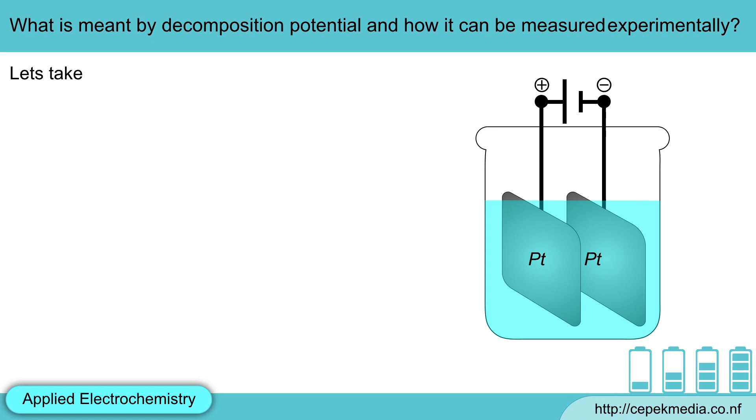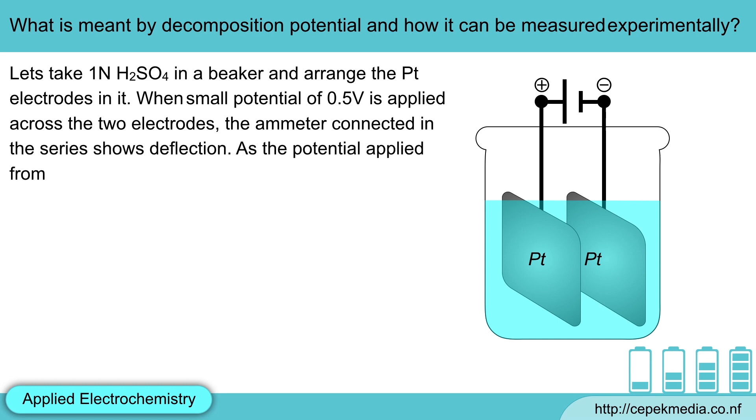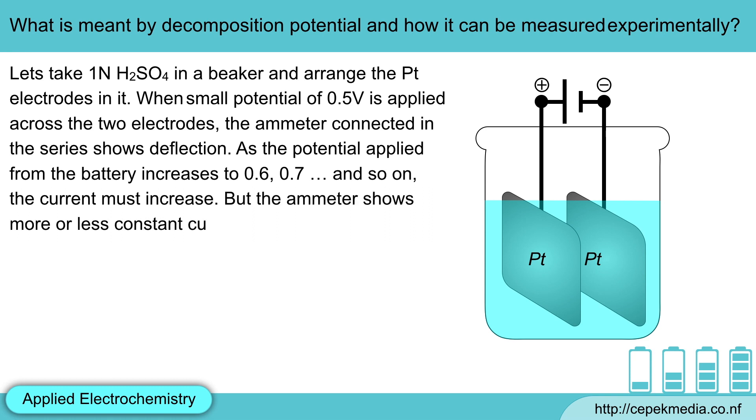Let's take one normal sulfuric acid in a beaker and arrange the platinum electrodes in it. When small potential of 0.5V is applied across the two electrodes, the ammeter connected in the series shows deflection. As the potential applied from the battery increases to 0.6, 0.7 and so on, the current must increase. But the ammeter shows more or less constant current. Why?